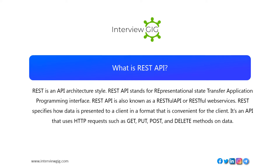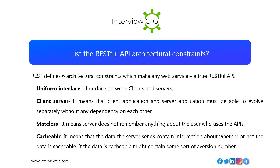It is an API that uses HTTP requests such as GET, PUT, POST, and DELETE methods on data. REST defines six architectural constraints which make any web service a true RESTful API: uniform interface between clients and servers, and client-server separation, meaning that the client application and server application must be able to evolve separately without any dependency on each other.